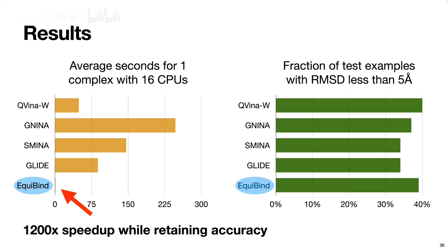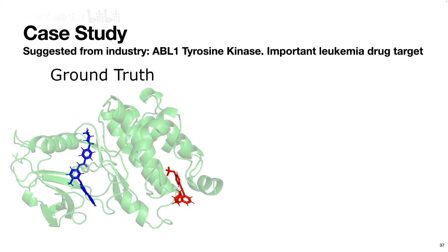This speedup is achieved while maintaining quality with respect to some metrics—the fraction of test examples for which EquiBind makes a good prediction is similar to that of the baselines. The protein shown at the beginning was not a random protein; it was suggested by Pat Waters, an industry expert and leader in drug discovery and molecular docking. He suggested it because it's a really hard case where all previous methods failed.